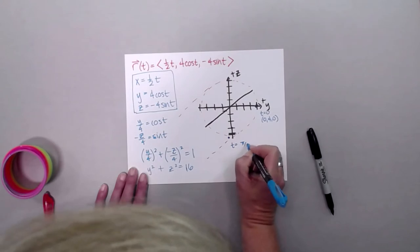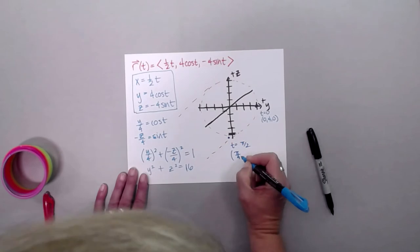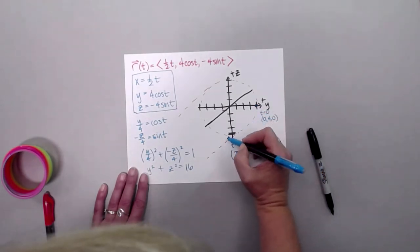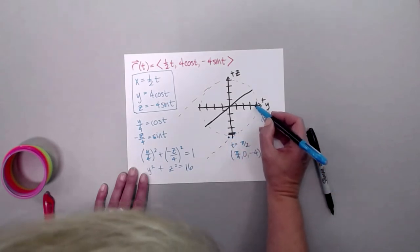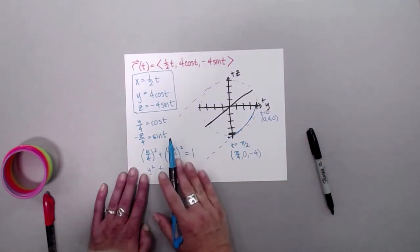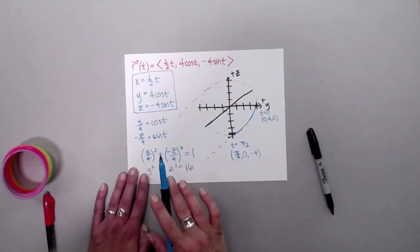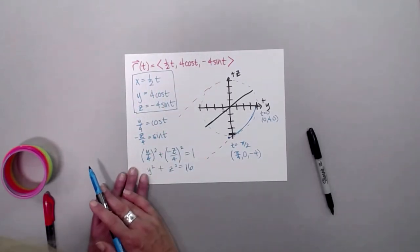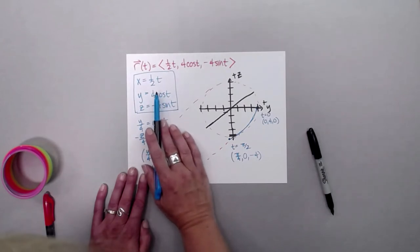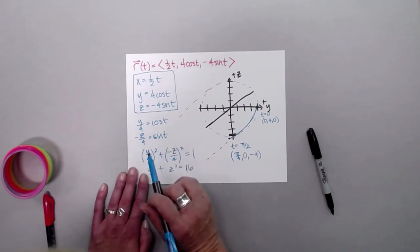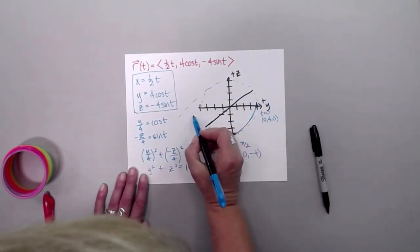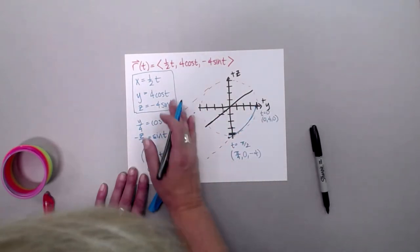At t = π: x = π/2 ≈ 1.5. Cosine of π is -1, so y = -4. Sine of π is 0, so z = 0. We're over on the left side of the cylinder and out about 1.5. I can sketch that in and add orientation arrows on the curve — remembering this curve is wrapping around the cylinder and coming out toward us.